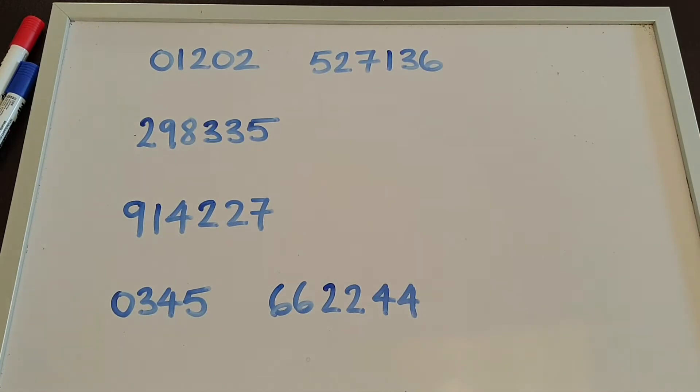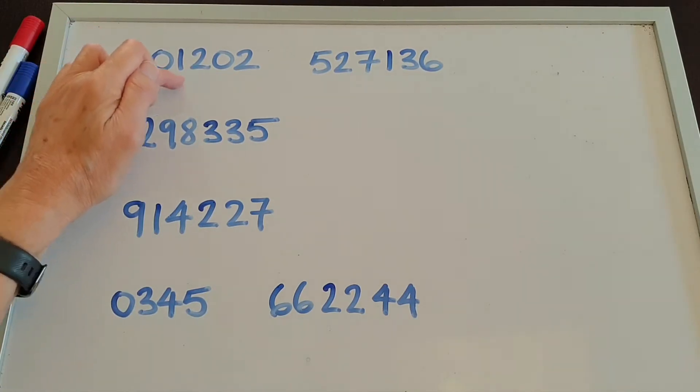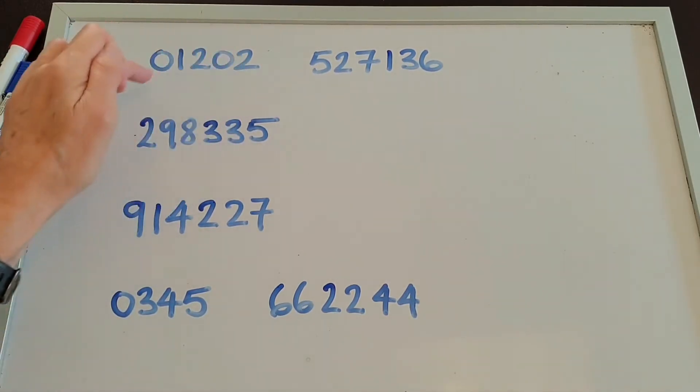Let's have a look at these telephone numbers. The first one: In British English we say 01202. We don't say zero in British English, we say O.